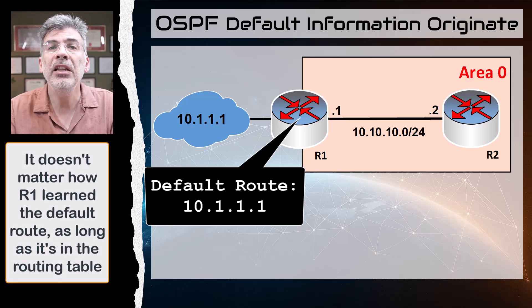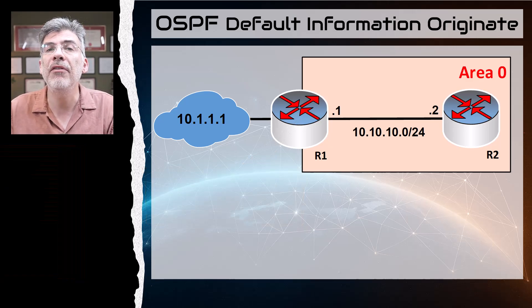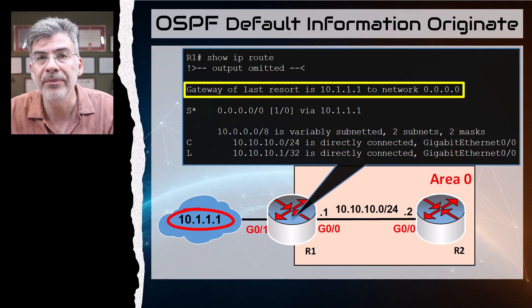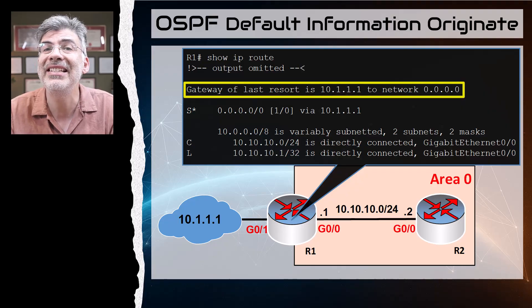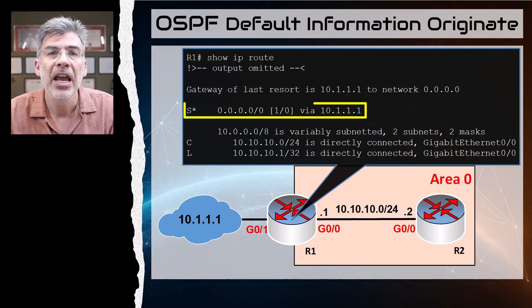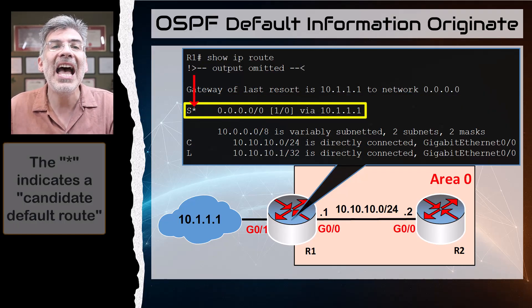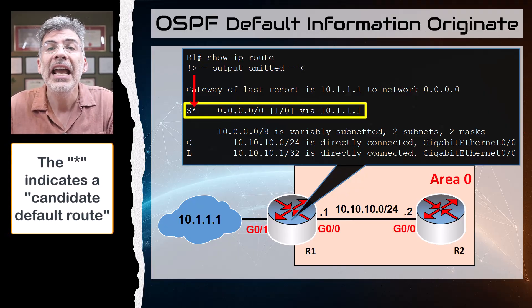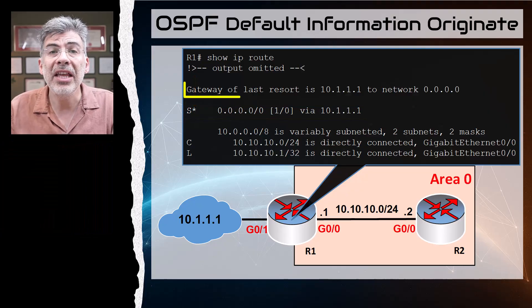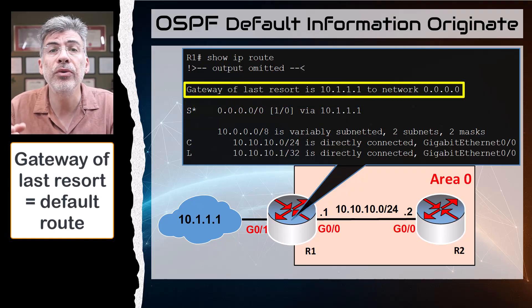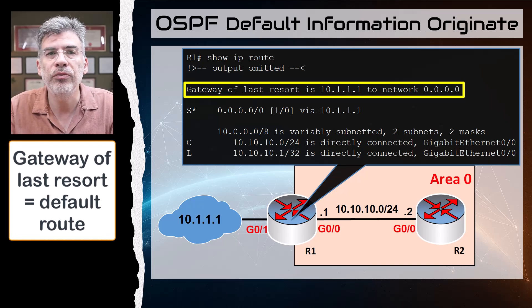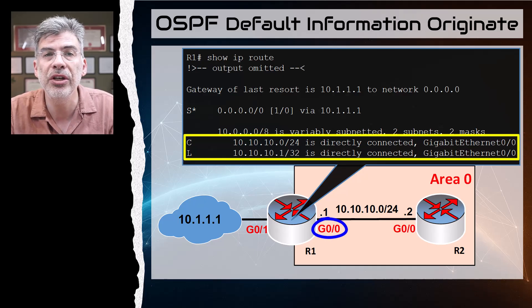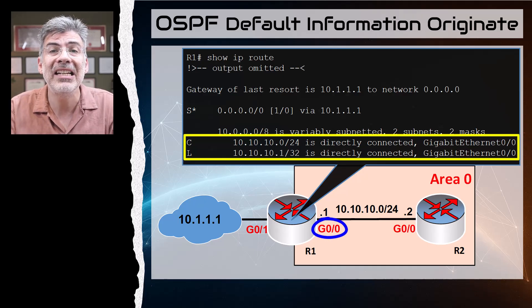Let's take a look at the current routing table of R1. We have a default route with the next hop of 10.1.1.1 — this is the result of a static route that has been configured. The asterisk shows us that it is a candidate default route; as the only candidate, it becomes the gateway of last resort, which is just the term used in the routing table to refer to the default route. We can also see the directly connected network on interface GigabitEthernet0/0.